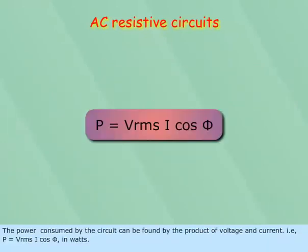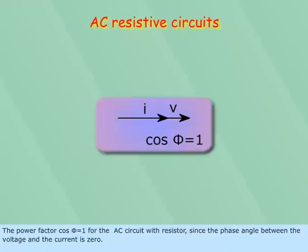The power consumed by the circuit can be found by the voltage and current, i.e. P equals V_RMS I cos phi in watts. The power factor cos phi equals 1 for the AC circuit with resistor since the phase angle between the voltage and the current is zero.